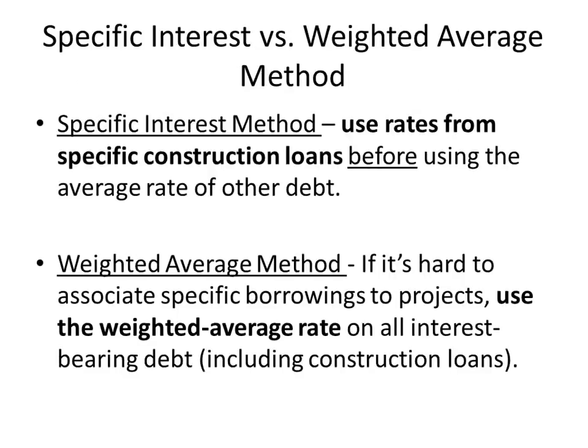There are two methods. The specific interest method is straightforward: you determine your average accumulated expenses and then identify the interest rate in effect. If you have a construction loan specifically for that project, you just look at the interest rate for that project — that's your specific interest method. Beyond that, if you have more debt than is allocated to that specific loan, you have to take the weighted average rate of all your other outstanding loans.